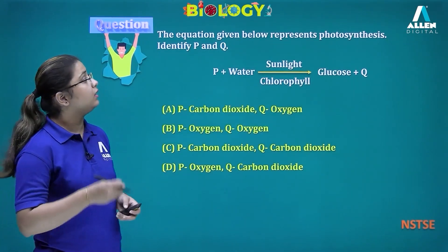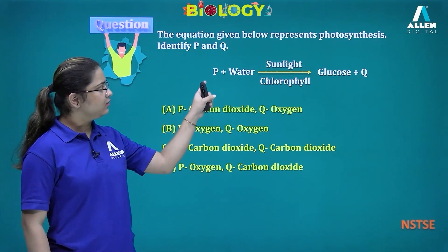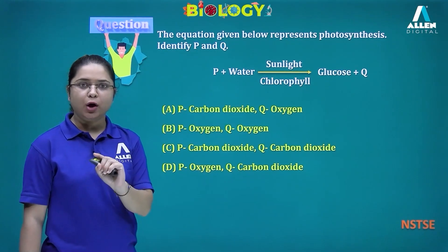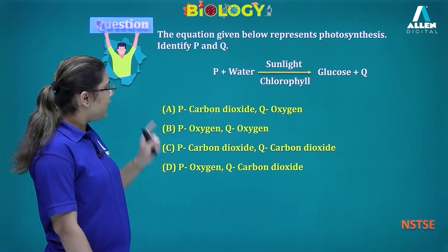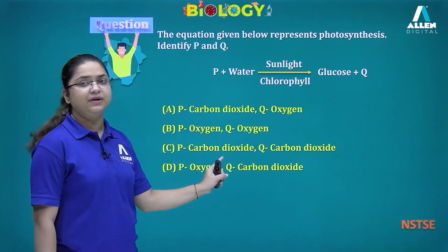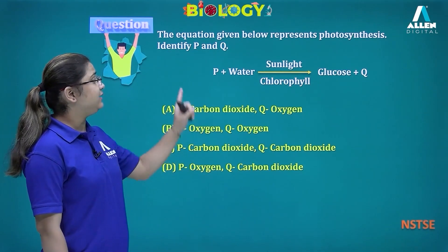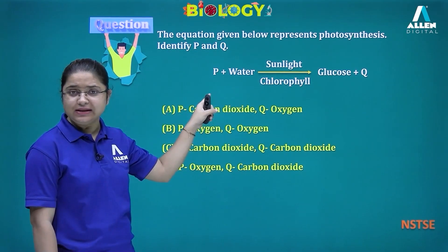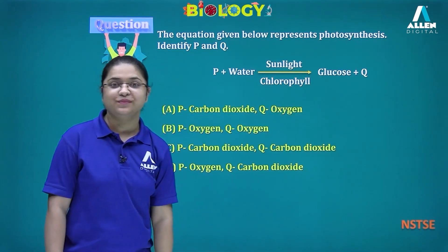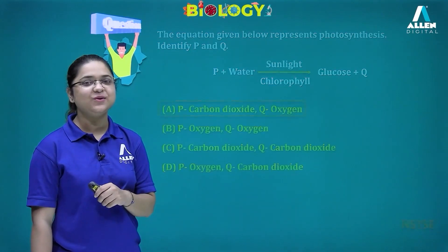The equation for photosynthesis: P + water, in the presence of sunlight and chlorophyll, gives glucose + Q. We know carbon dioxide and water are needed, producing glucose and oxygen. So P is carbon dioxide and Q is oxygen. The answer is option A.